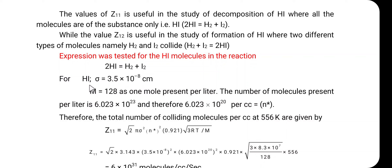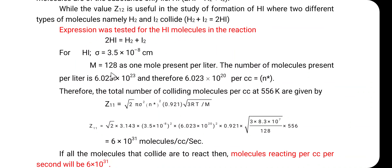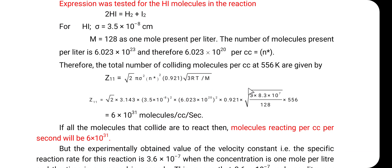The diameter of the hydrogen iodide molecule is σ = 3.5 × 10⁻⁸ cm. Its molecular weight is 128. As 1 mole is present per liter, the number of molecules present per liter is 6.023 × 10²³ (Avogadro's number), therefore 6.023 × 10²⁰ per cubic centimeter, which equals n*. The total number of colliding molecules per cc at 556 K is given by: Z11 = √2 · π · σ² · (n*)² · 0.921 · √(3RT/M).